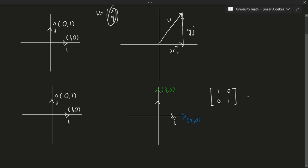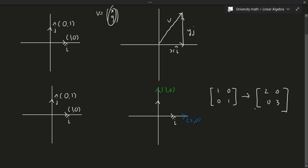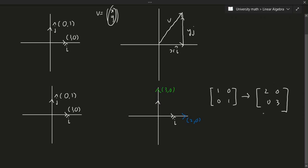In matrix form, what really happened? I transformed my vectors originally written as [1,0; 0,1] — which are the coordinates written as entries in a matrix — and this became the matrix [2,0; 0,3]. So this matrix captures the overall effect of applying this transformation to the standard basis vectors.